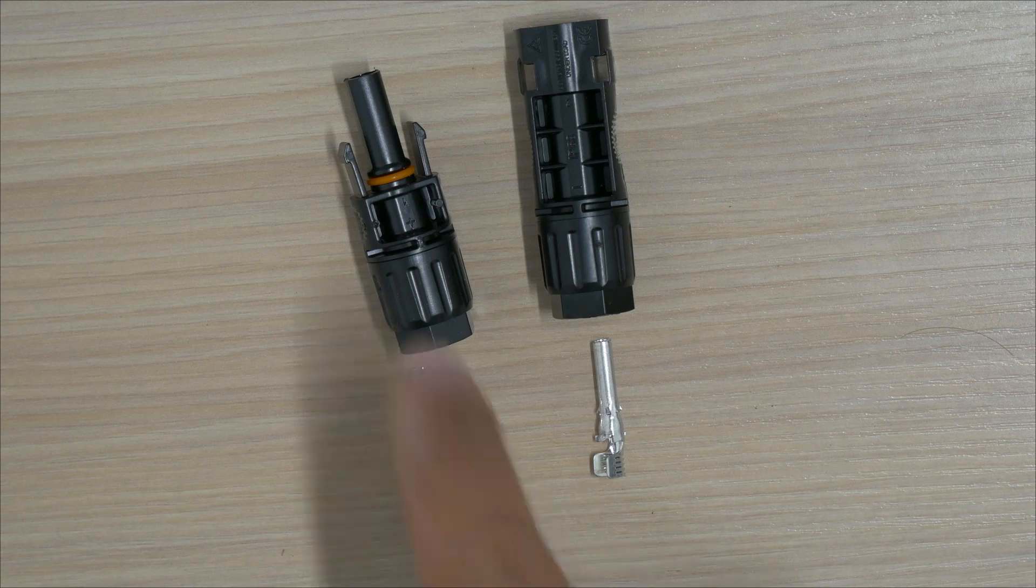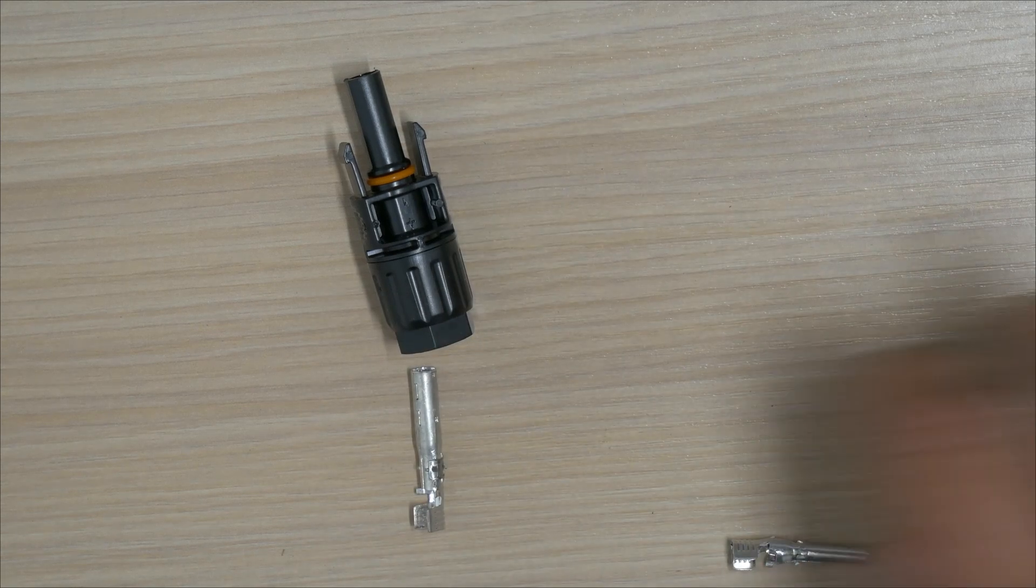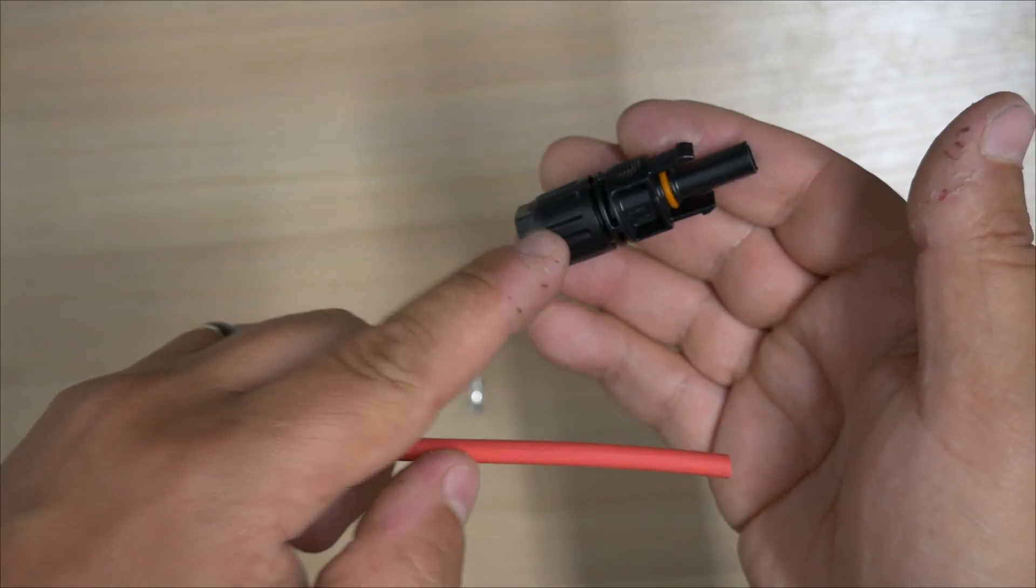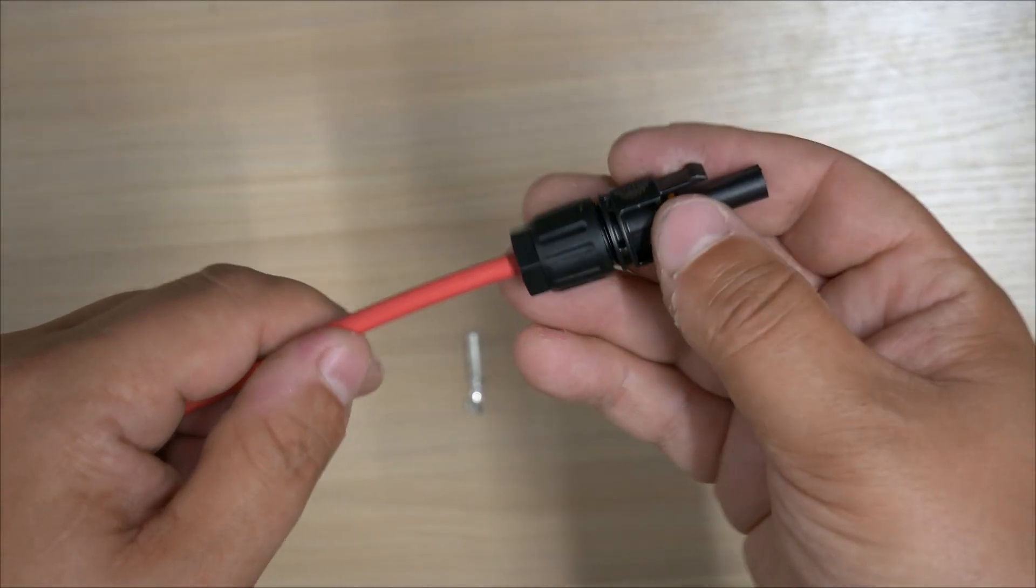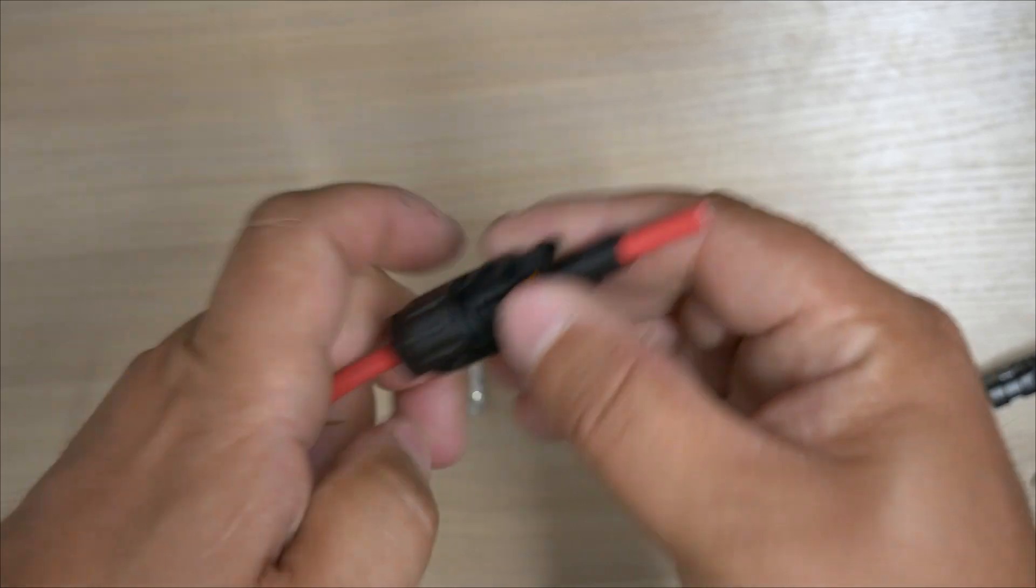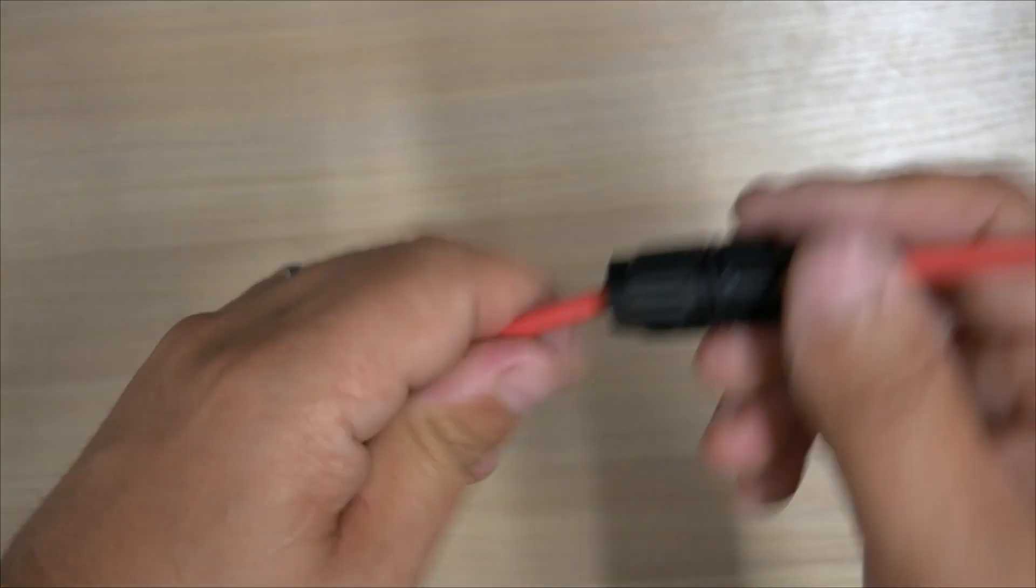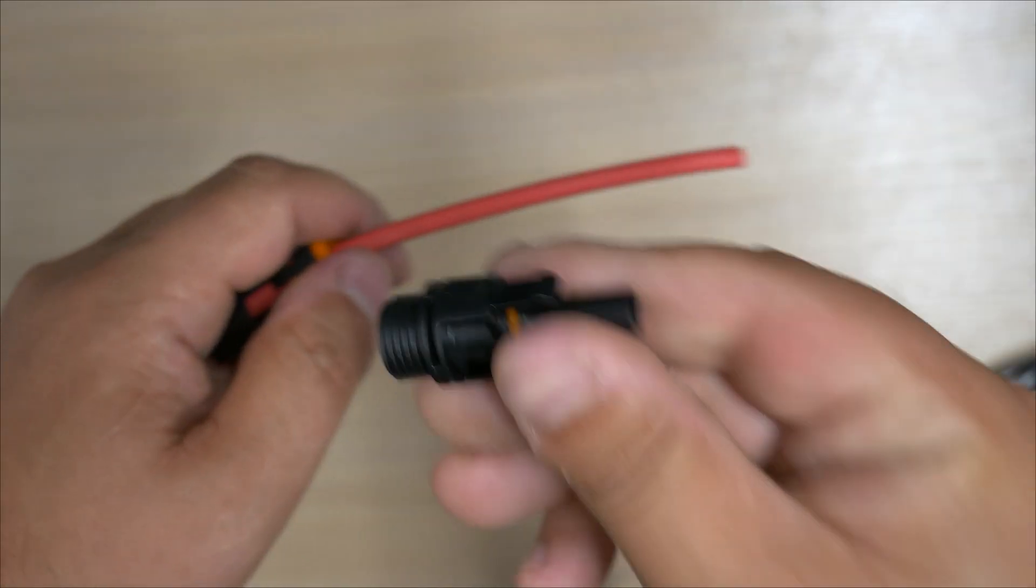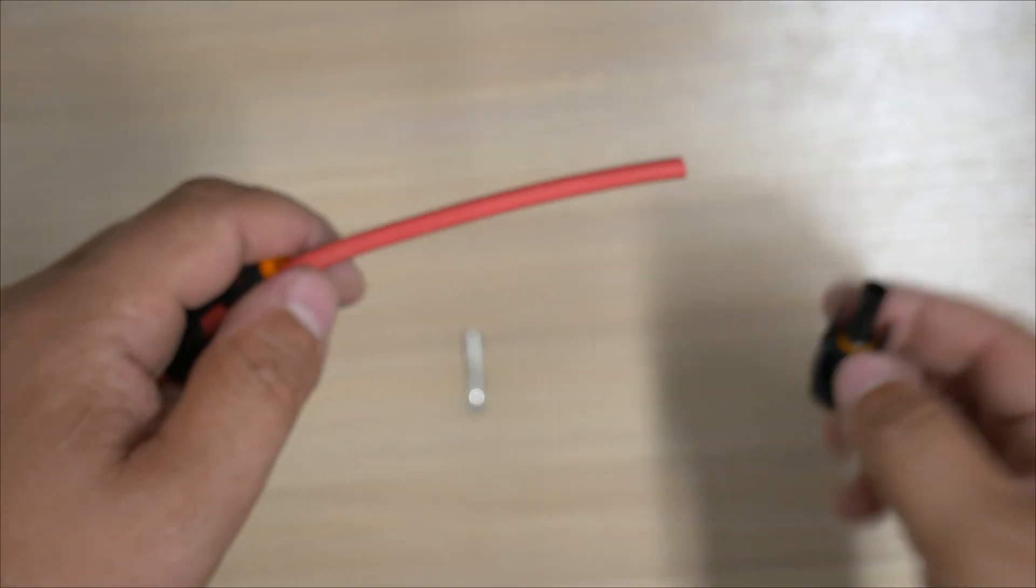So we'll do that now. We'll go for this side to begin with. So the male connector with the female pin. So we need to pop the back part of this connector onto the cable. I always find it a little bit easier to do while it's all in place. So just push the cable through, undo the back, and then pull the front part of the connector off.